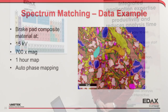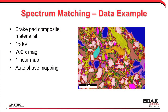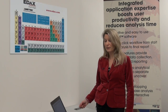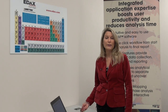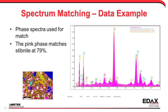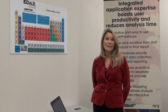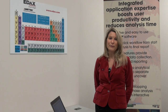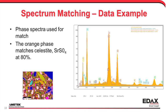We can take the analysis even further by combining it with the power of automatic phase mapping. In auto phase mapping, we ran a high quality map for one hour. At the end of the map, the auto phase selection gave us not just the phase distribution in the image, but also the phase spectra from each of those different areas — all areas with like chemistry. In this case, the pink spectrum was used as the basis for comparison, and we can see that it matches stibnite at 79%. We can continue doing this for other examples, such as the strontium sulfate we also see in the map set.